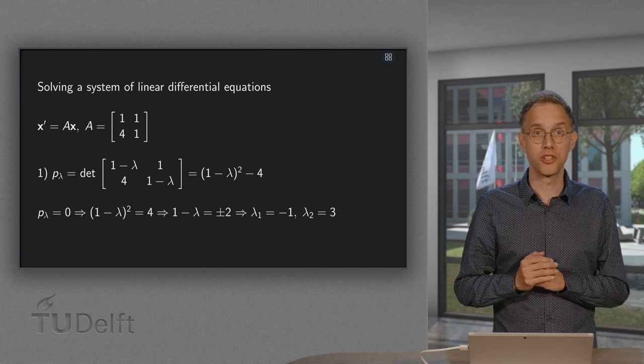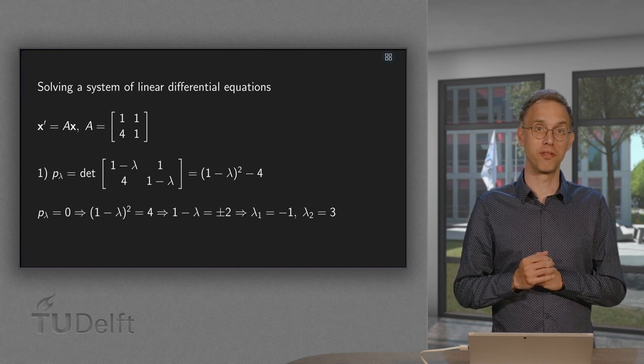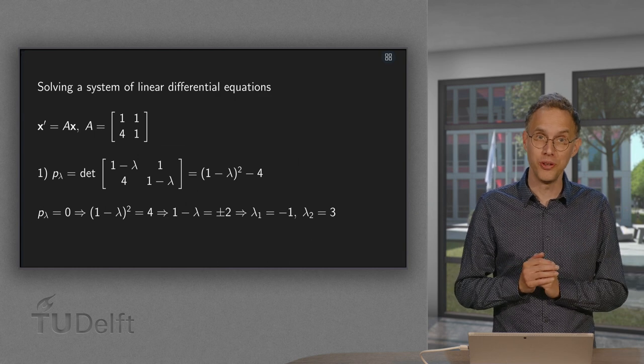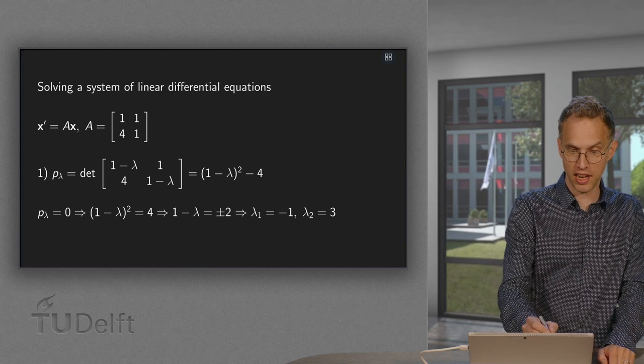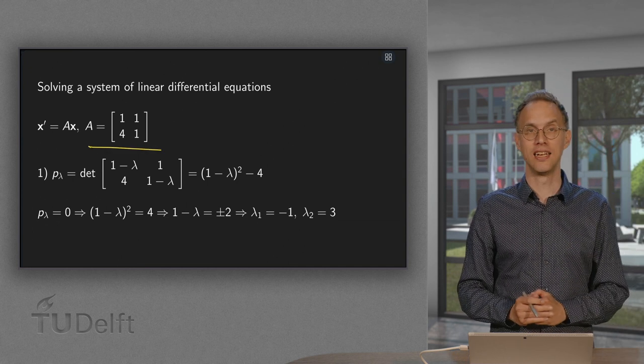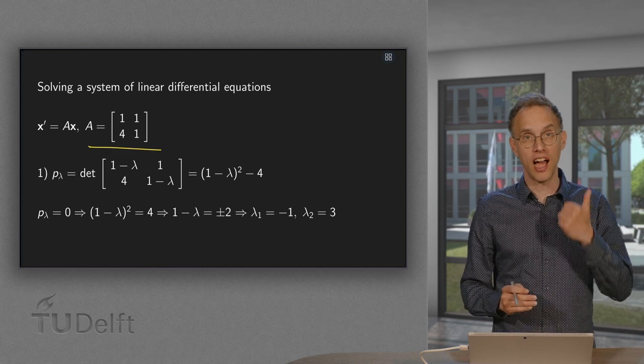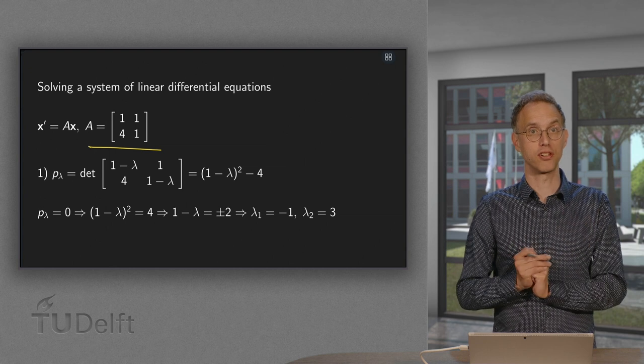And we will also discuss where the errors are coming from and how you can avoid them. So let us take a look at x' equals Ax and here we have our A. So we need our eigenvalues and our eigenvectors first.